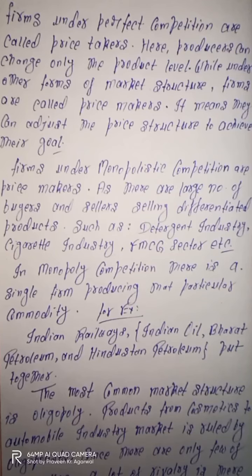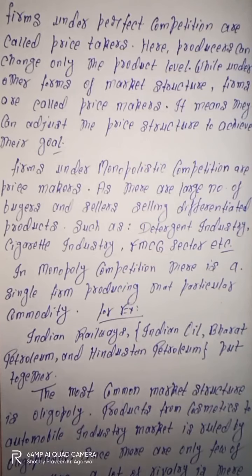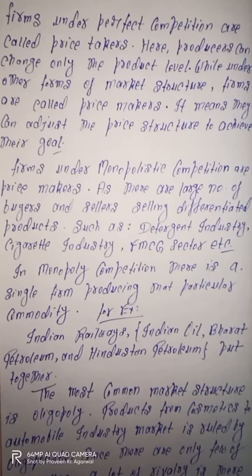जबकि other forms of market structure की बात करें तो यहाँ पर जो firm होती है वो price maker होती है, वो अपने product के price को decide कर सकती है। अपने goal को achieve करने के लिए अगर firm अपने price structure को change करना चाहे तो वो change कर सकती है, जबकि perfect competition में ऐसा नहीं होता। Monopolistic competition में सारी firms price makers होती हैं क्योंकि monopolistic competition में there are large number of buyers and sellers and all the sellers are selling differentiated products। यह differentiation quality, brand, और features के basis पर होता है।